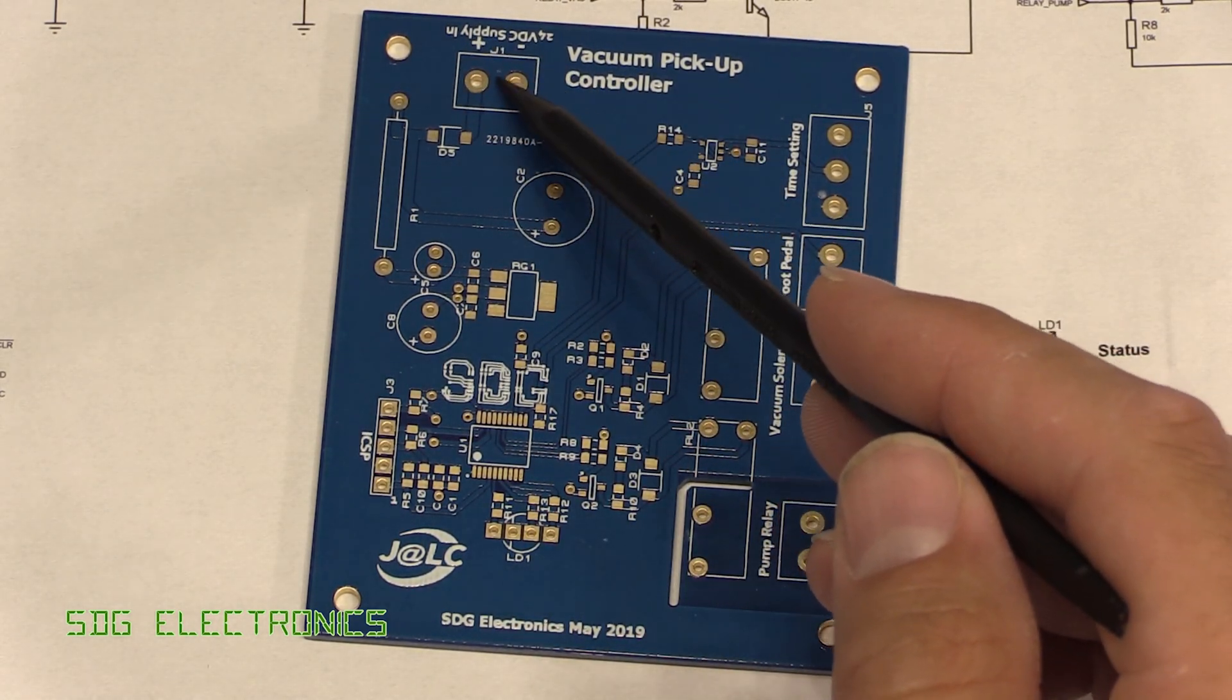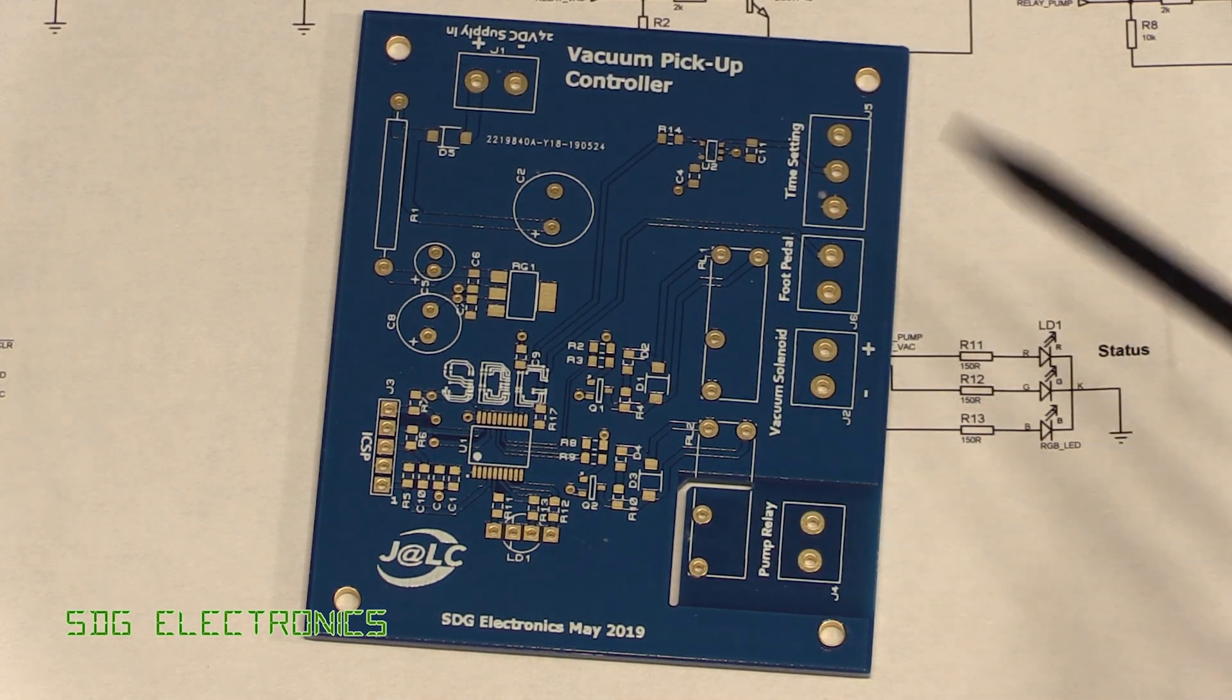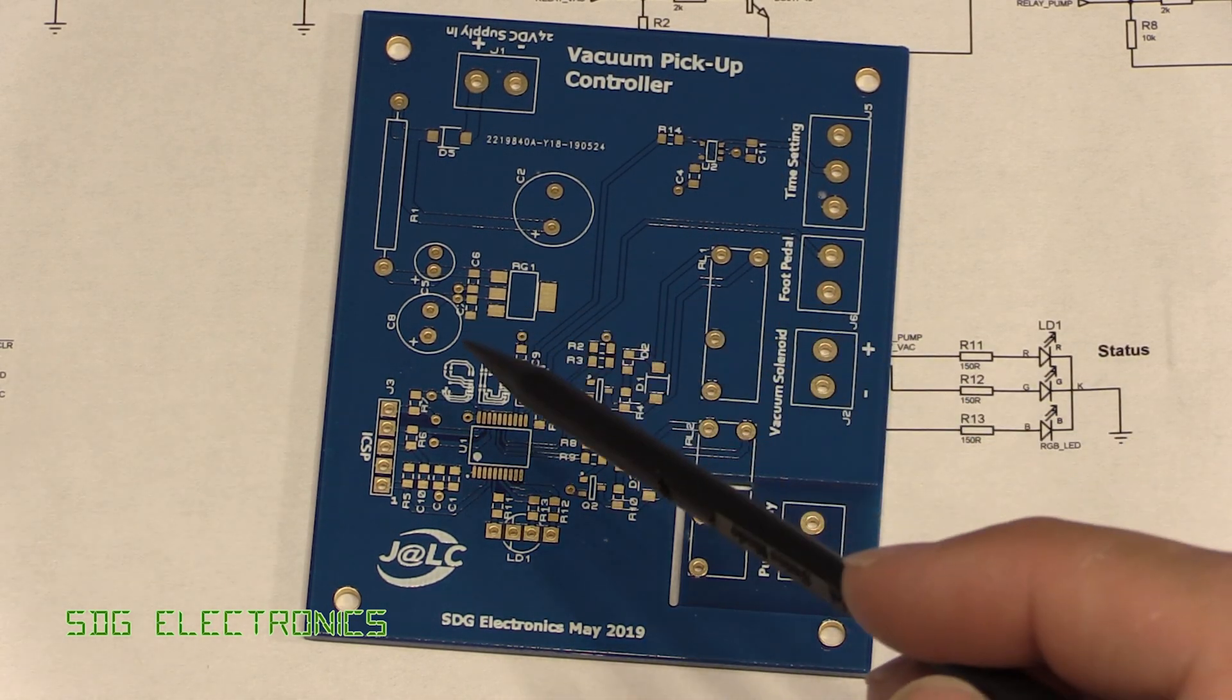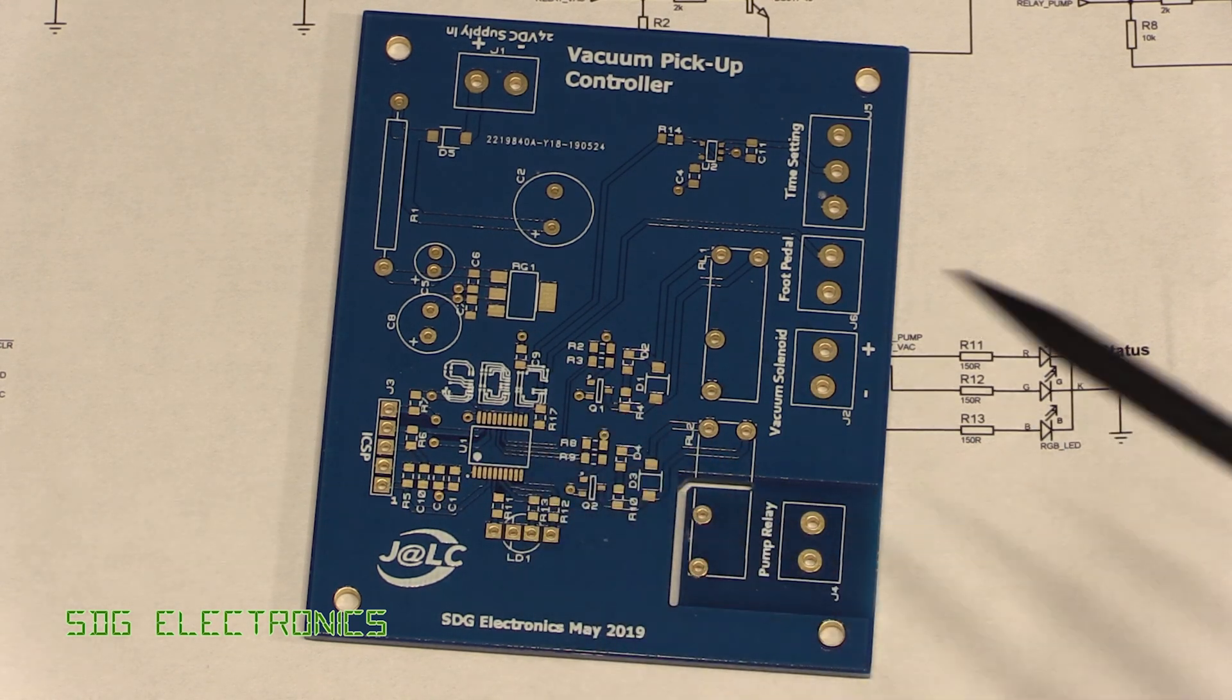We've got the 24 volts coming in at the top here which is the correct voltage for the relays and also for the solenoid and then we've got a voltage regulator which drops down the voltage to 3.3 volts for the microcontroller.